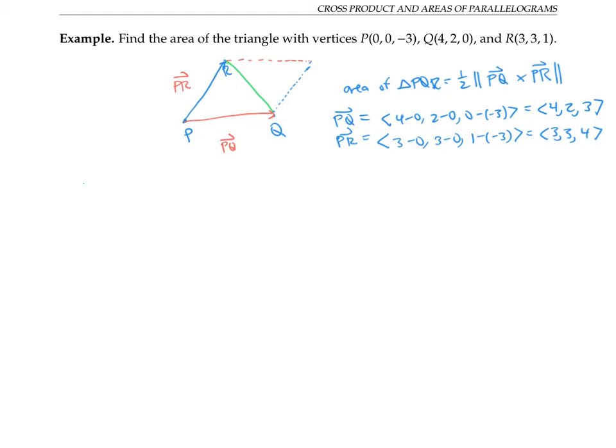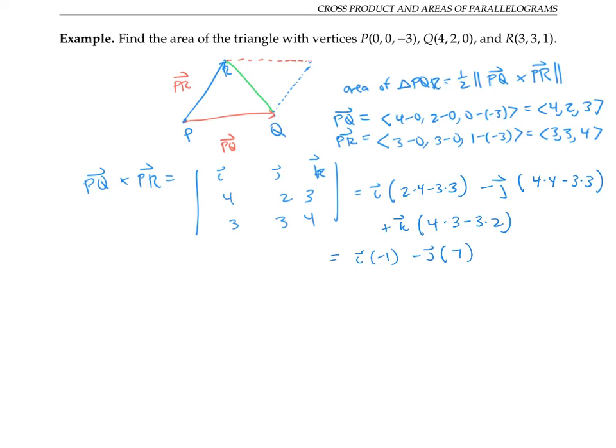Now, let me take the cross product PQ cross PR. So that's going to be I times two times four minus three times three, minus J times four times four minus three times three, plus K times four times two. That simplifies to I times minus one minus J times seven, plus K times six. In other words, I have the vector minus one, minus seven, six as my cross product.